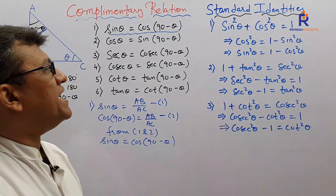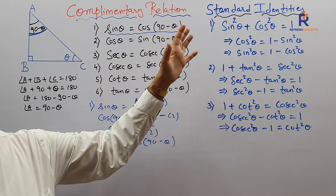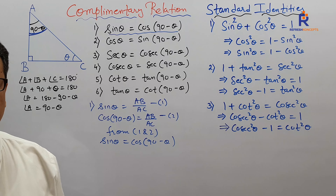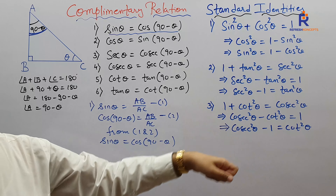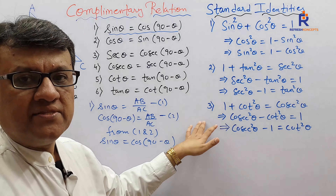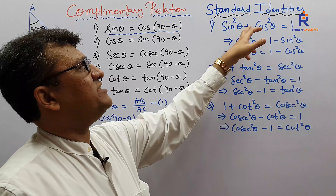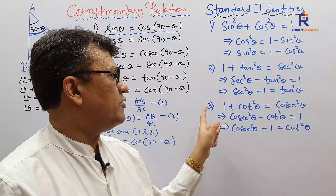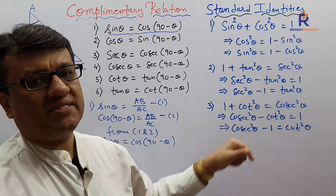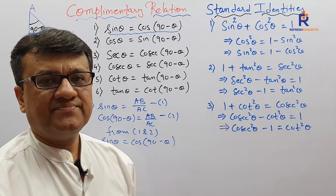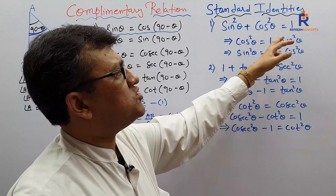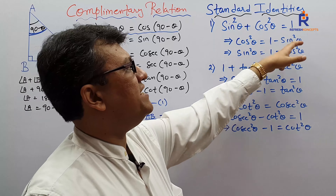Now comes the main, all-important standard identities of trigonometry. If you want to master proof sums — proving LHS equals RHS — you should be very well versed with standard identities. There are three standard identities: sine squared plus cos squared equals 1, one plus tan squared equals sec squared, and one plus cot squared equals cosec squared. From the first identity, cos squared equals 1 minus sine squared — pure math.